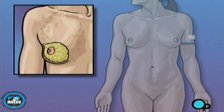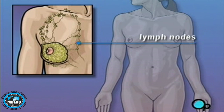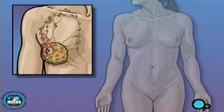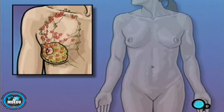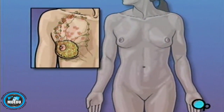Lymph nodes are small junctions that join the vessels that make up the lymphatic system. The lymphatic system circulates a bodily fluid called lymph in the same way that the circulatory system carries blood. Your doctor has recommended that you undergo a modified radical mastectomy because the cancer in your breast may have begun to move into the lymph nodes under your arm as well as into your chest muscle.